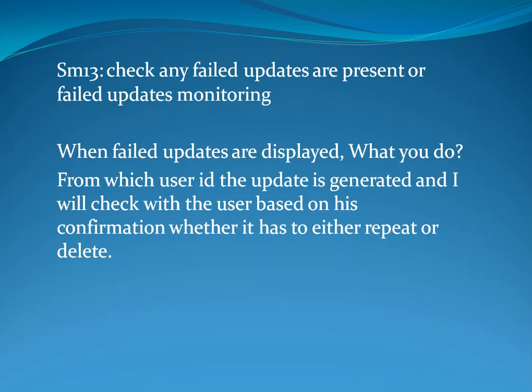SM-13 T-code is used to check for any failed updates. If any failed updates are displayed, I check from which user ID the update was generated, and based on their confirmation, I either reprocess or delete that update.